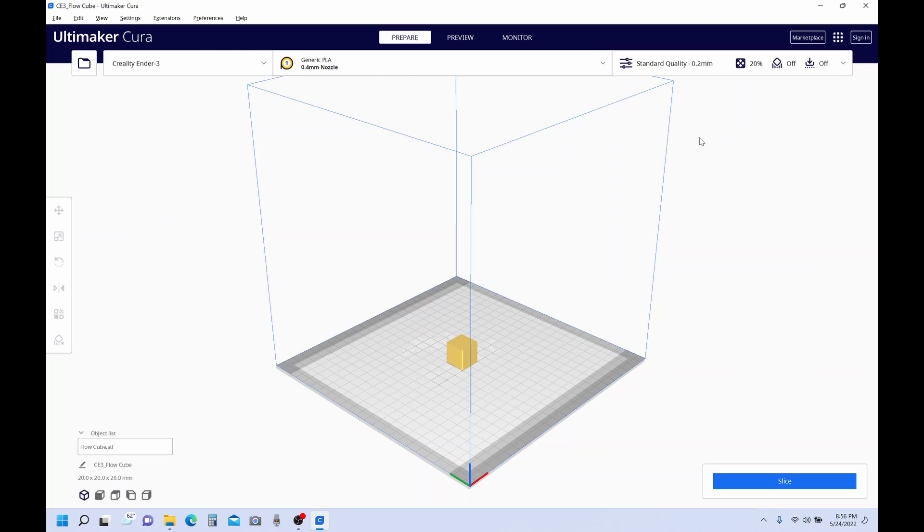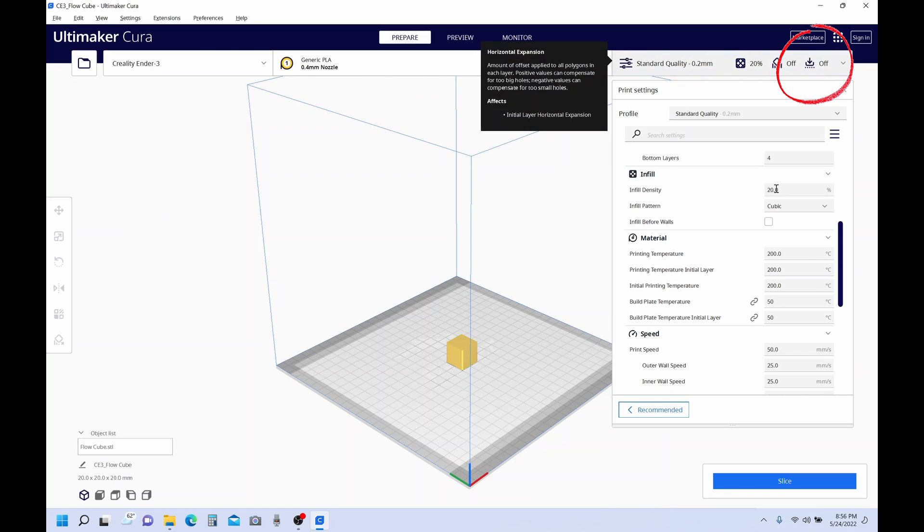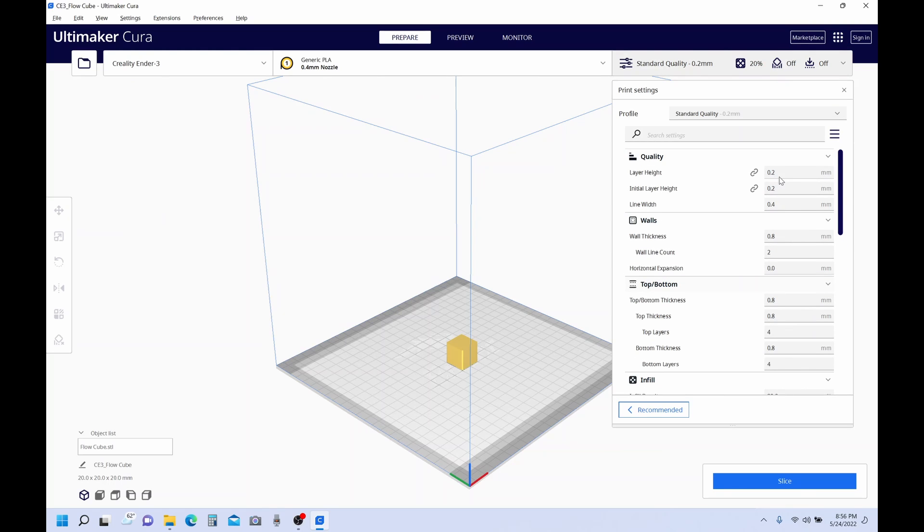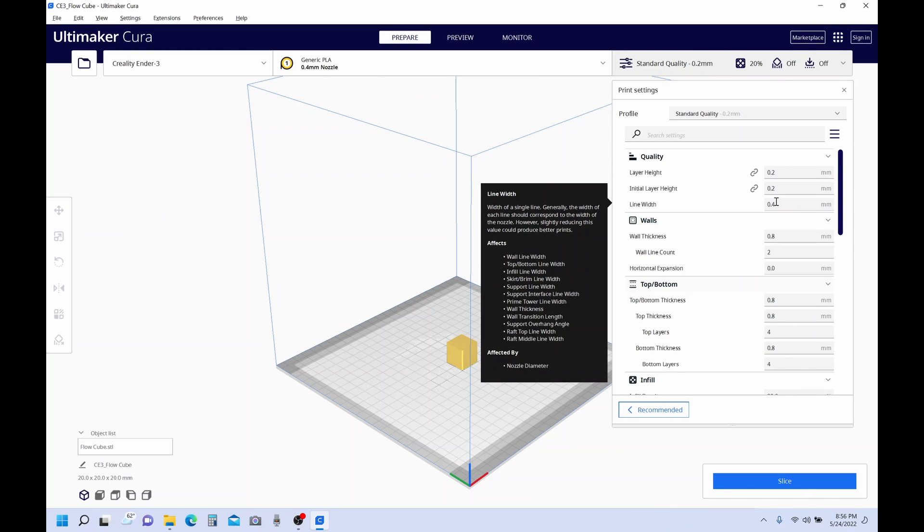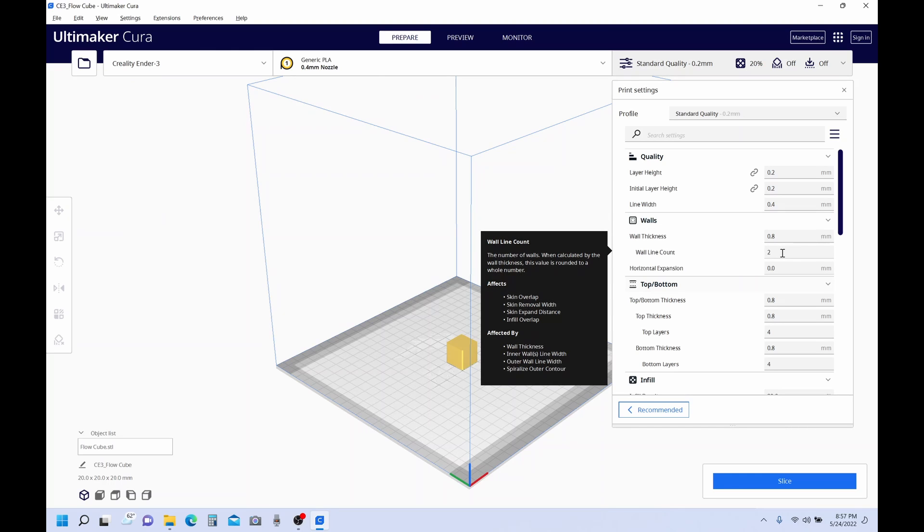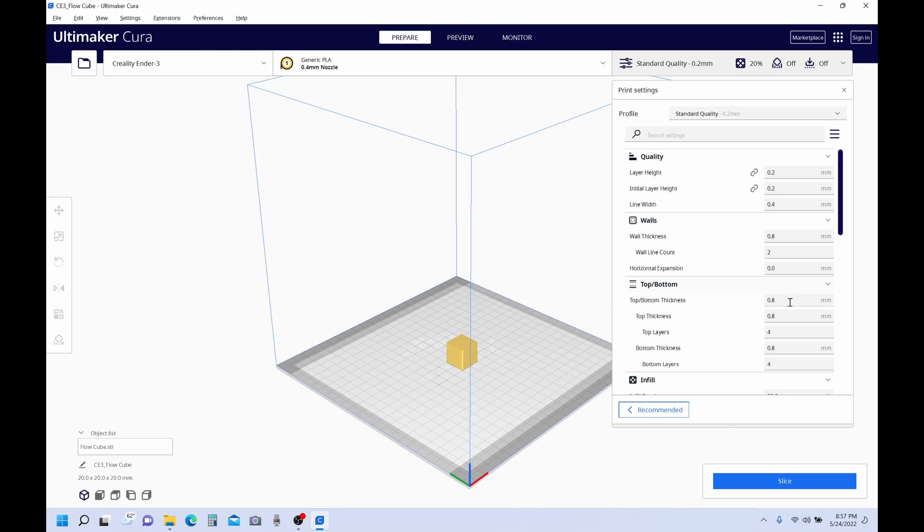Now we'll want to make some changes to the settings on our profile. Right now, I have no step visible settings. So what I'll do is click right here, open them up, we'll move up to the top, and what we'll want to do is leave our layer height at 0.2, our line width at 0.4. Our wall at 2 is good.